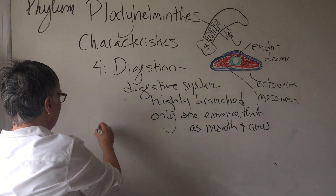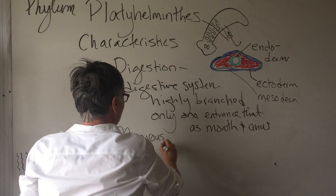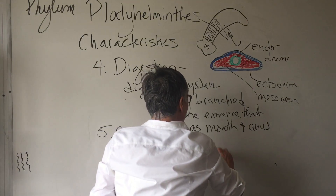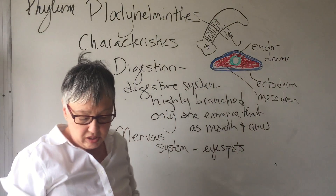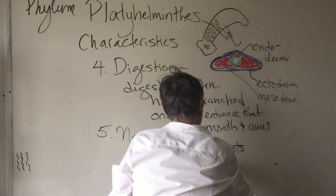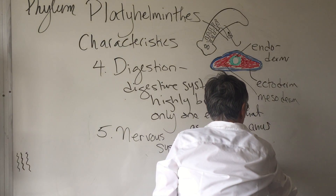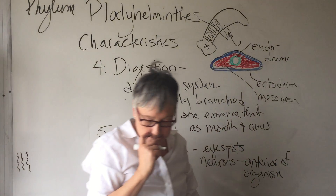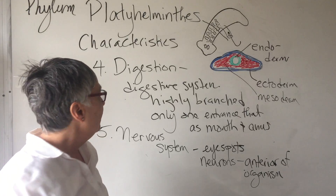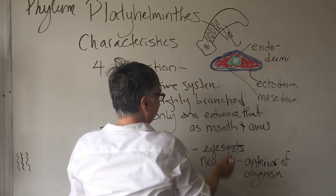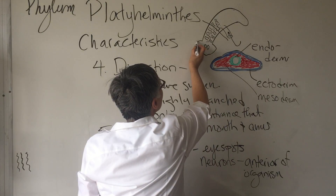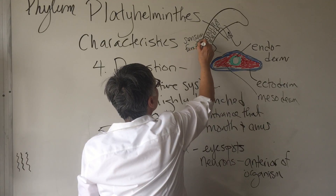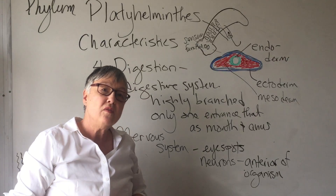Point number five: we do have a nervous system. There are two eye spots that are sensitive to light. We have neurons toward the anterior, or front, of the organism. Up in that region there are some nerve clusters. In addition, the two flaps have sensory function and appear to be associated with olfaction, or smell.